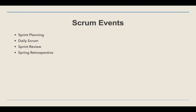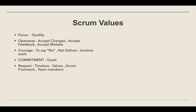The fourth ritual is the Sprint Retrospective, where we analyze what went well, what we can improve, and what unnecessary things we can remove. If we are planning any improvements, we create action items and put them in the backlog, and based on priority we take them up. These are the four Scrum events that any Scrum team should follow. Now, the Scrum values: the first is Focus — we should focus on quality with no compromises. The second is Openness — all team members should be open to each other, accepting feedback, changes, and mistakes.